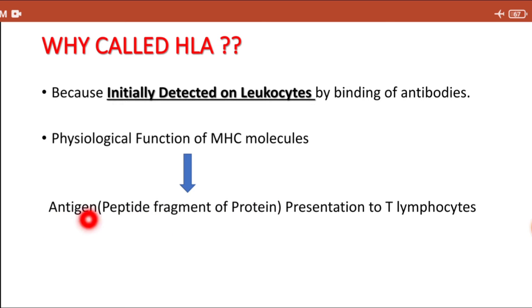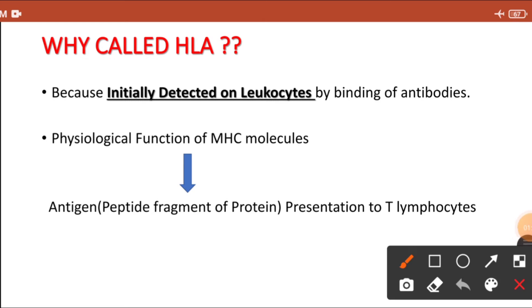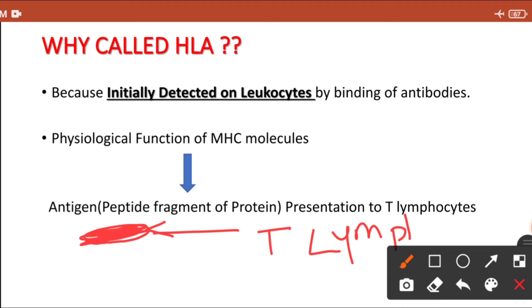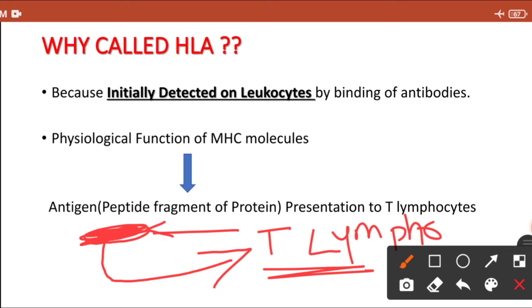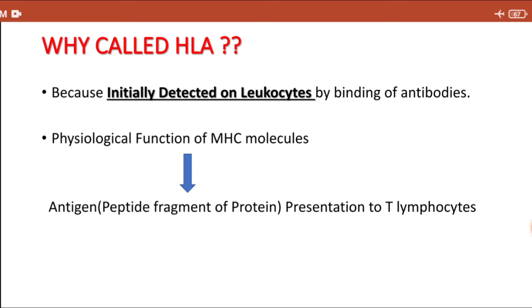The main important function of the MHC molecule is to present the antigen — that is, a peptide fragment of a protein — to the T lymphocyte. For example, a bacterial antigen has to be recognized by the T lymphocyte for killing, but the T lymphocyte cannot directly recognize that antigen. The MHC molecule helps in recognition of that antigen to the T lymphocyte, which is why they are known as the antigen presenting system of our adaptive immunity.